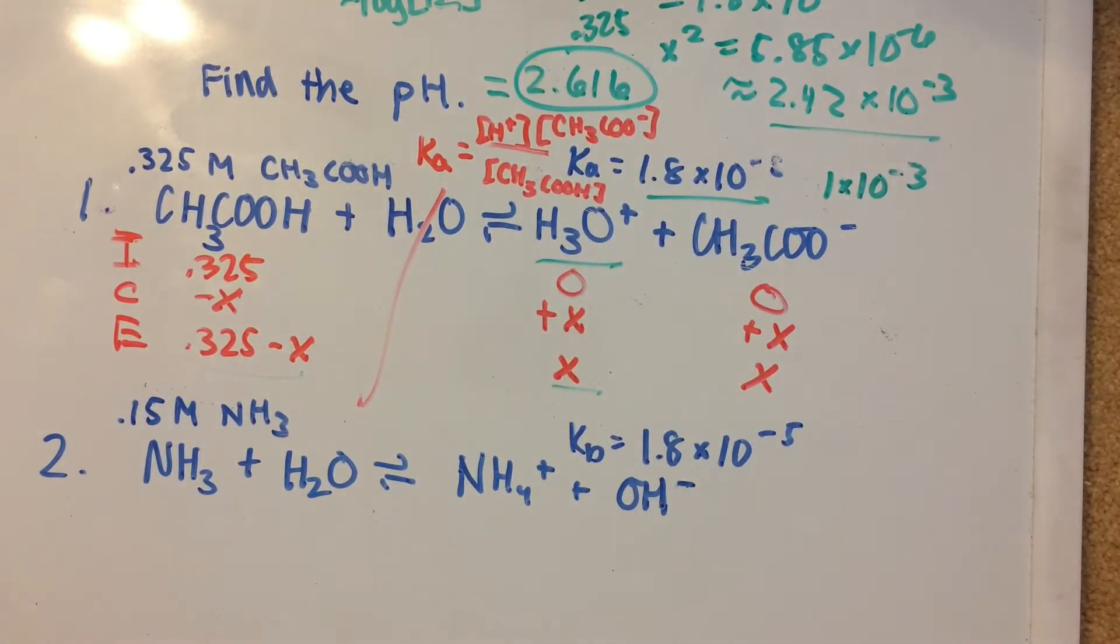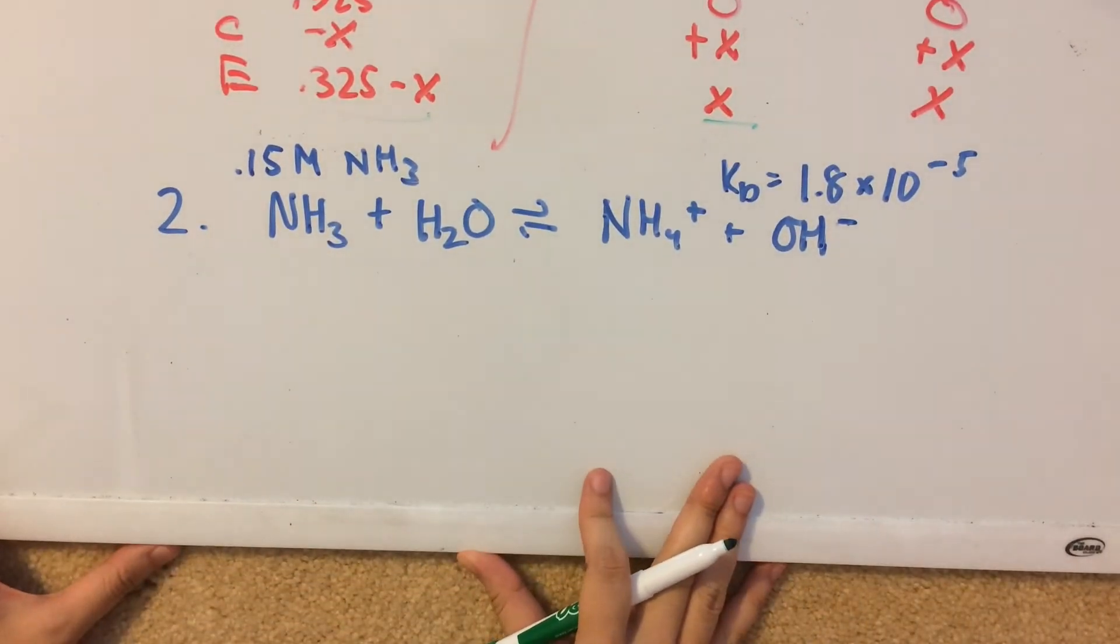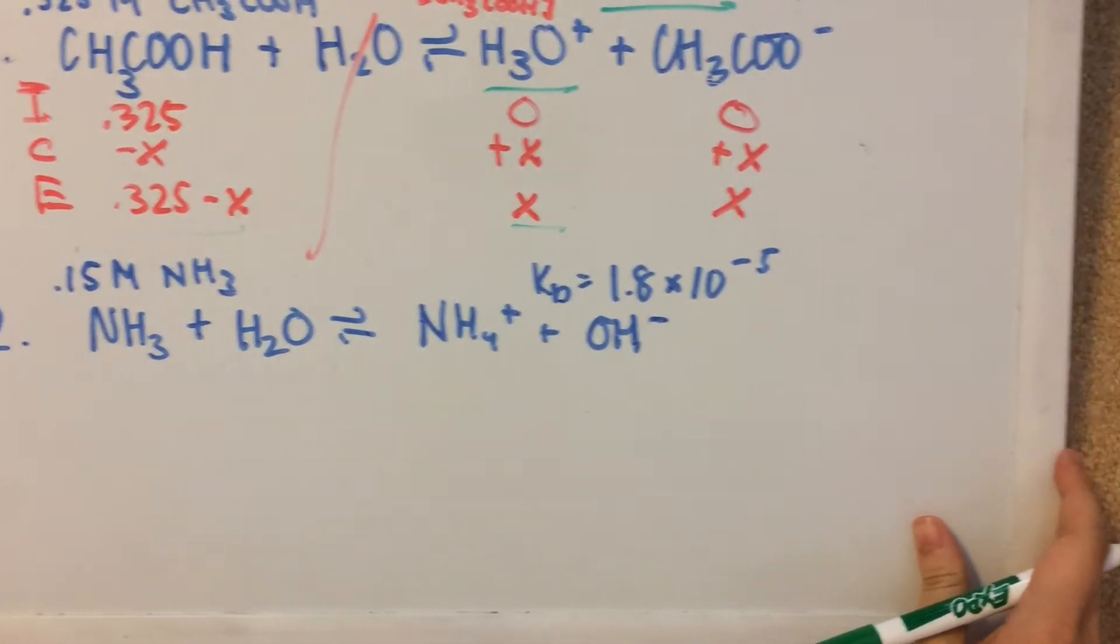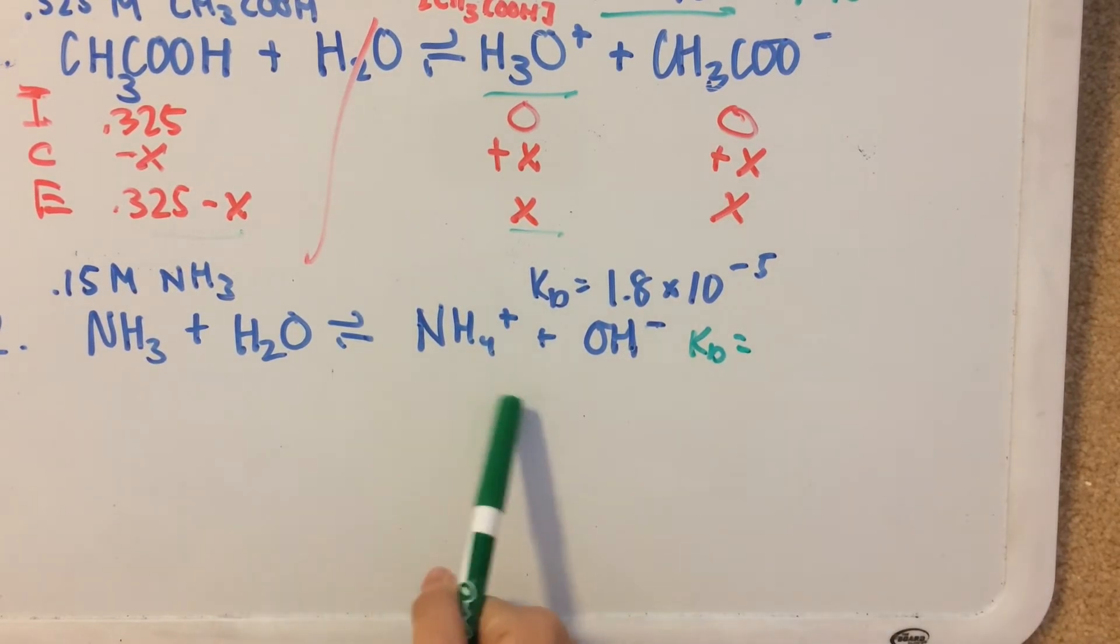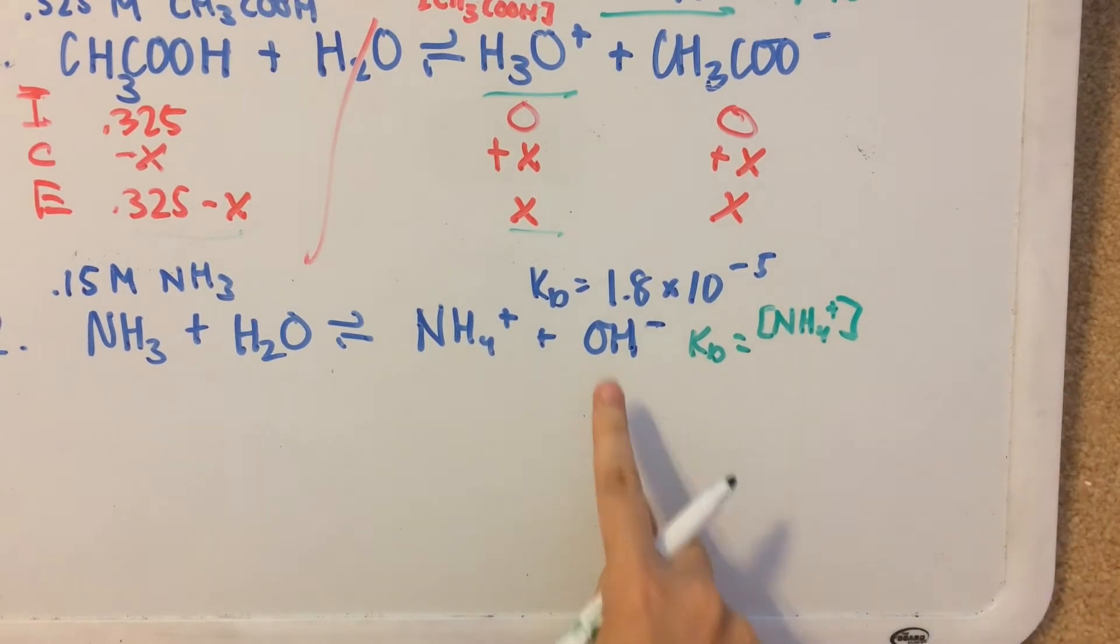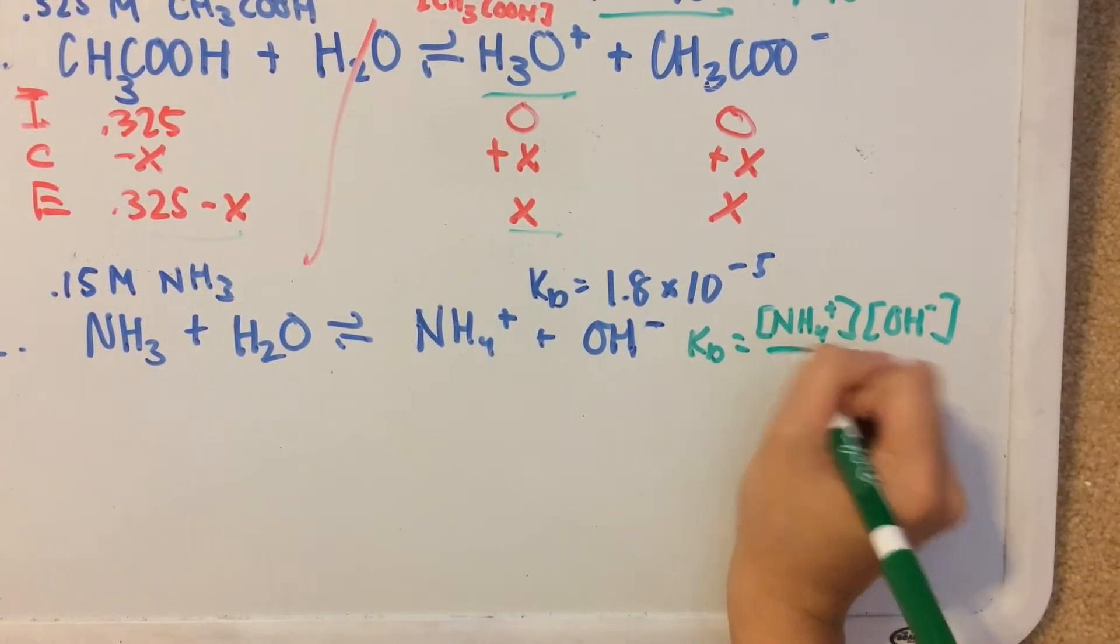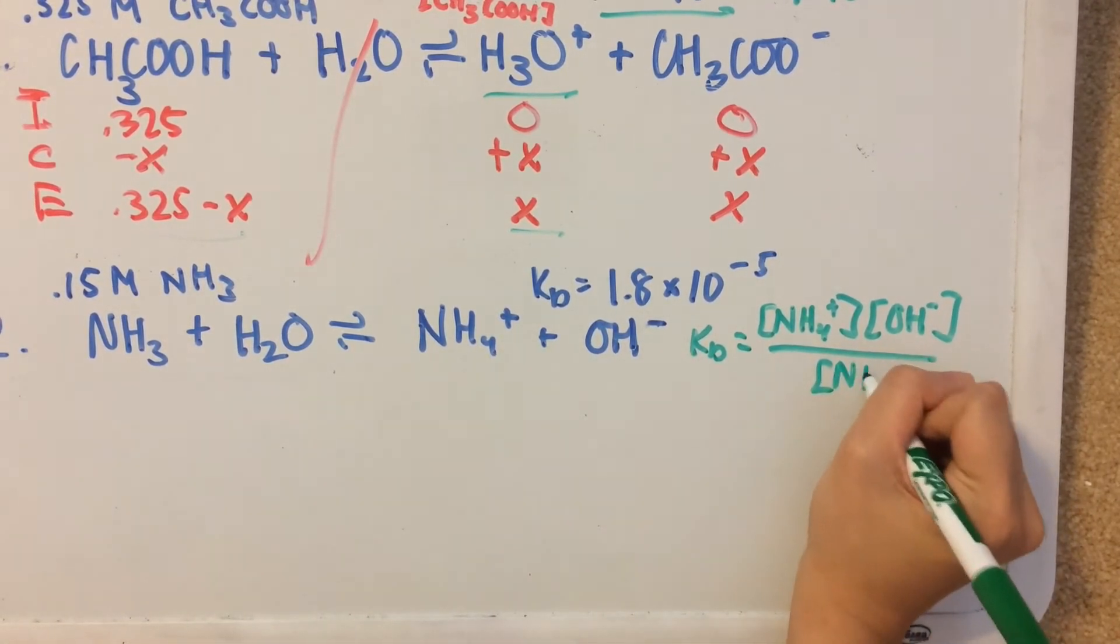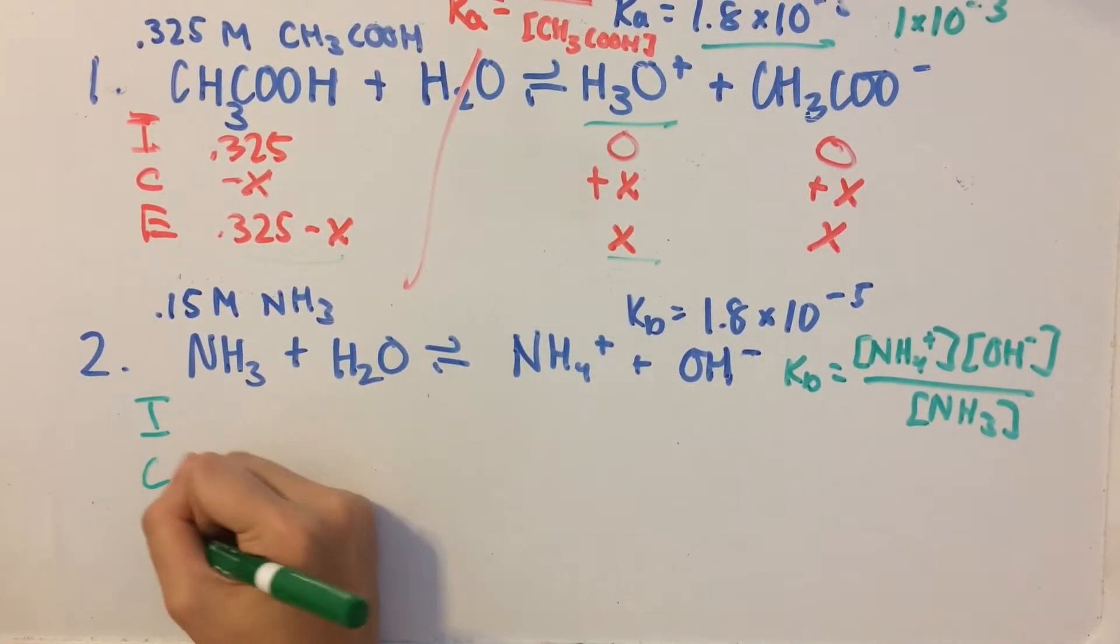Now, next thing is the basic equation. We're going to do the exact same thing. Let's write out the KB first, which is going to be NH4 plus times concentration of OH minus over NH3. Now let's put another ice chart in.